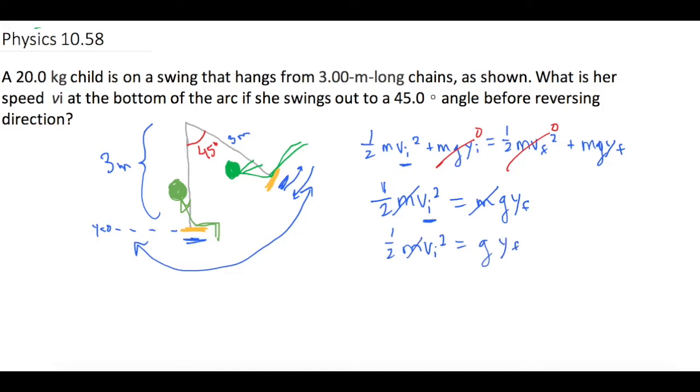The m's not there. Let me make it look nicer and erase it. So one-half v initial squared equals g y final. There we go.